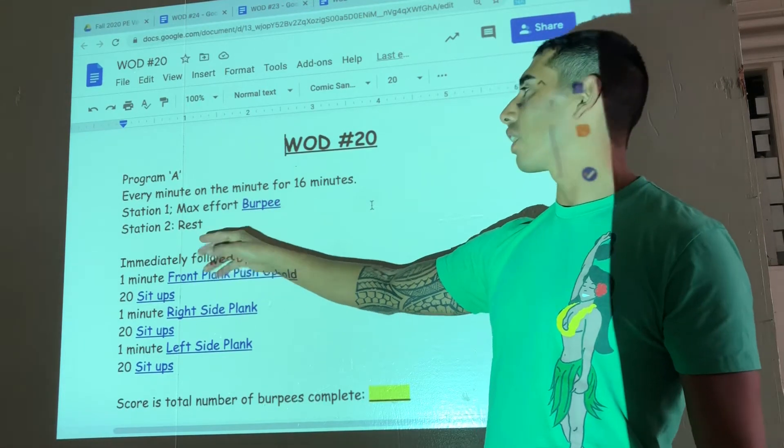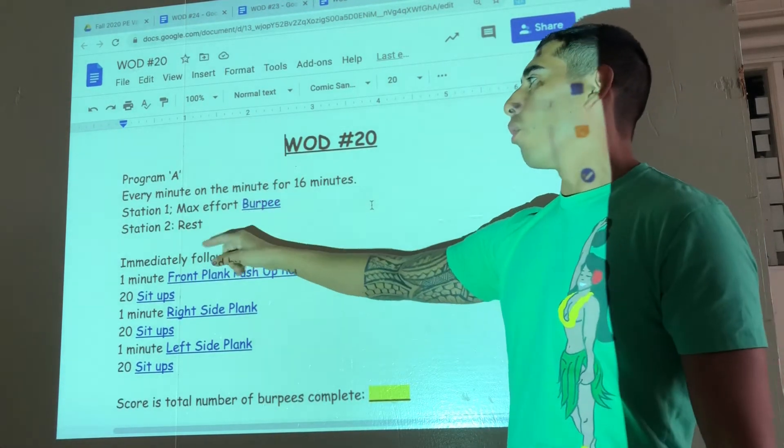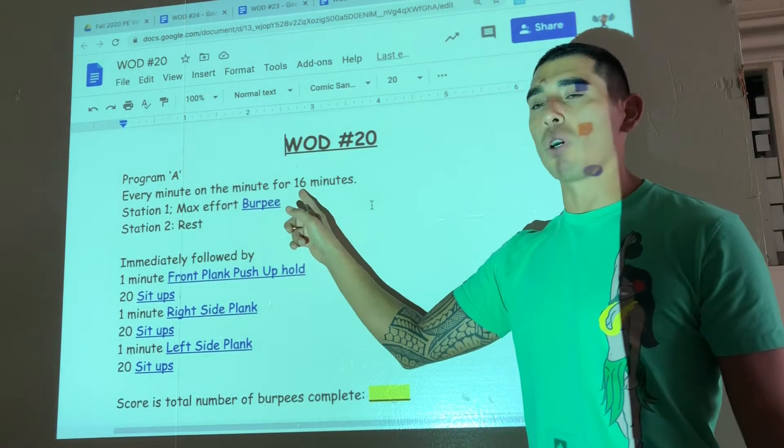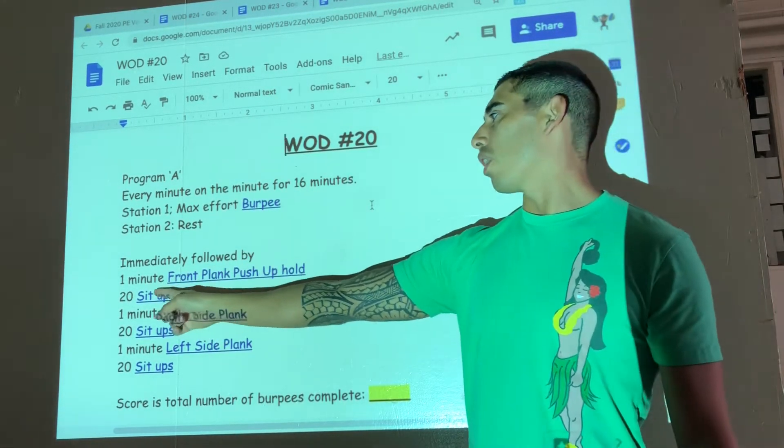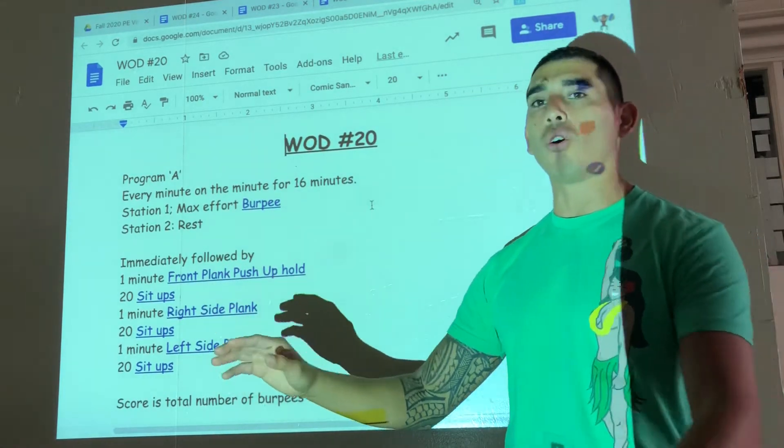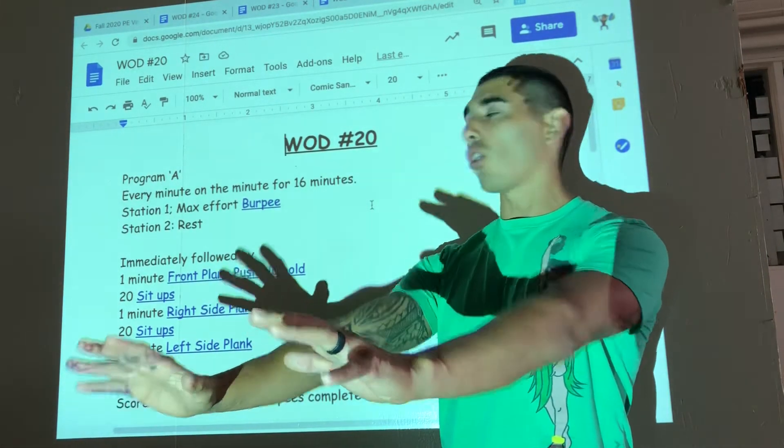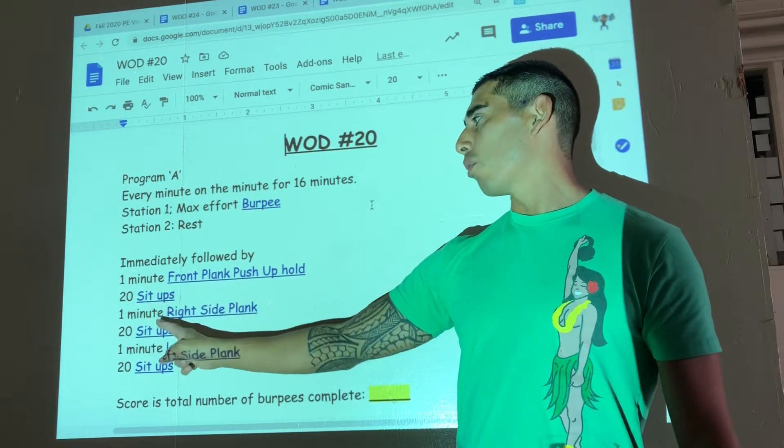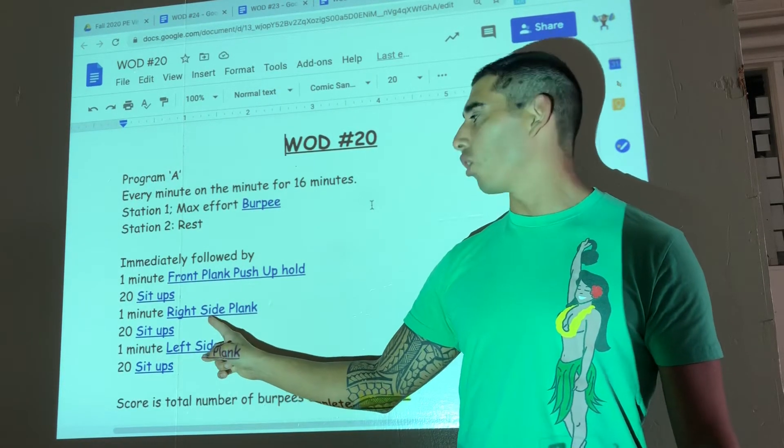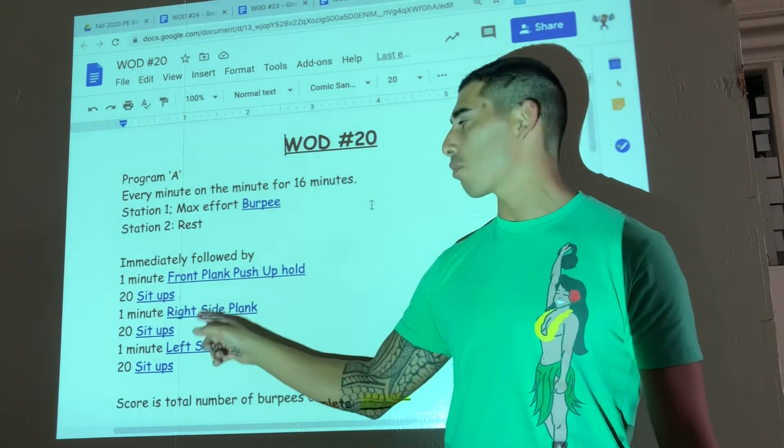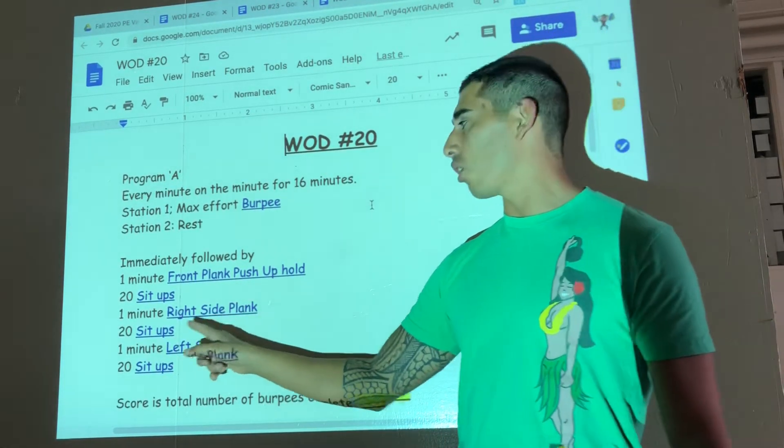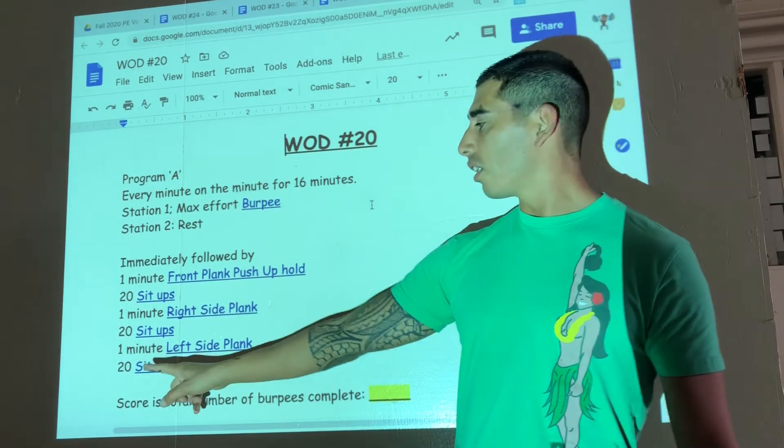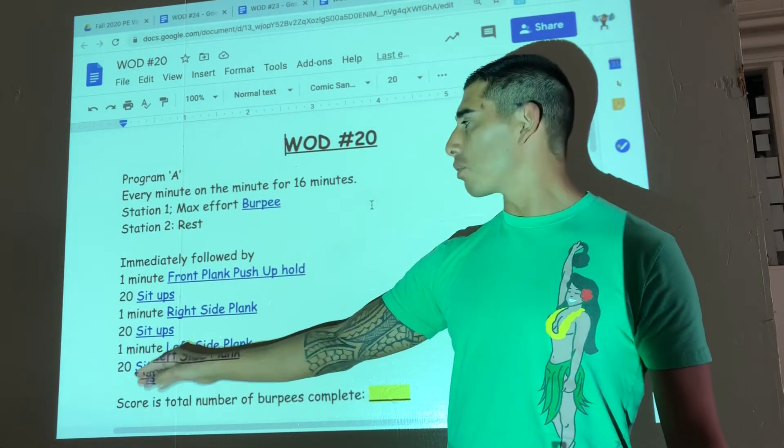That's Program A. Once you finish the 16 minutes, you immediately start. At 16 minutes and one second, you will start one minute front plank push-up hold. After the one minute, 20 sit-ups. One minute right side plank hold. These are hyperlinks if you can't remember. After your right side plank hold, 20 sit-ups, followed by the left side plank hold, and then 20 sit-ups.